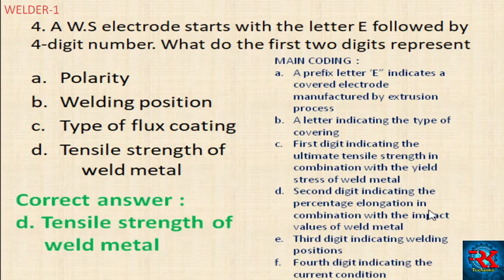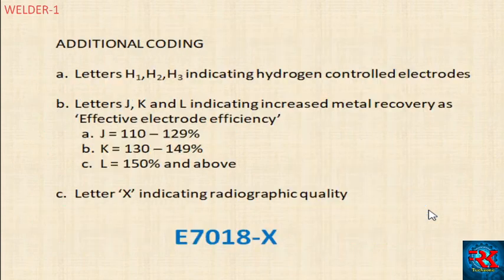The fourth digit indicates the current condition — the type of current used for the electrode.